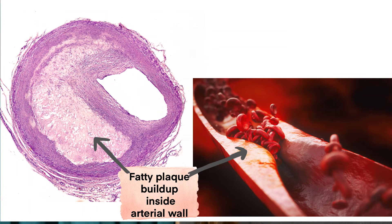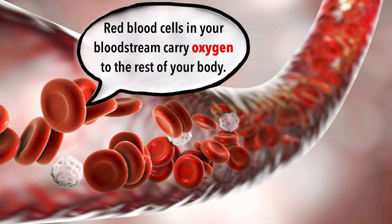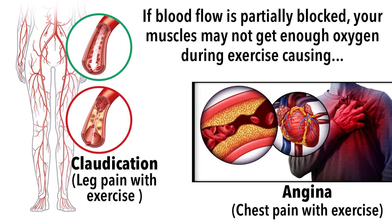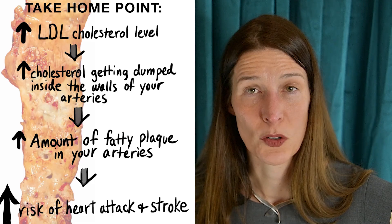Even if a plaque does not rupture, it gradually expands in size and begins to block blood flow through that artery. Once the expanding plaque blocks about 70% of the internal diameter of the artery, the tissue supplied by this artery will often not get enough blood supply and oxygen when it's needed most. This lack of oxygen can cause chest pain, which we term as angina, or leg pain, which the medical term is claudication, when walking.